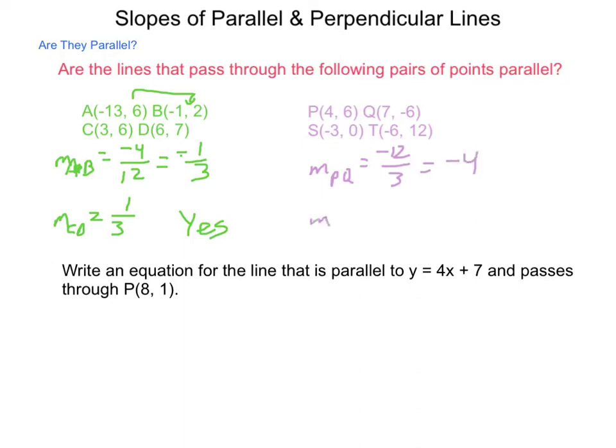The slope of line segment ST, the rise from 0 to 12 is 12. The run from negative 3 to negative 6 is a negative 3. And again, we come up with a negative 4. So yes, these lines are parallel as well.